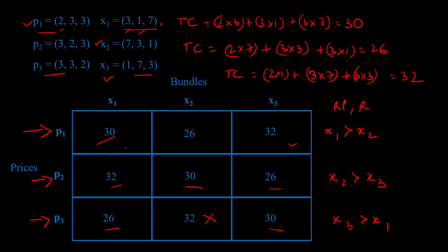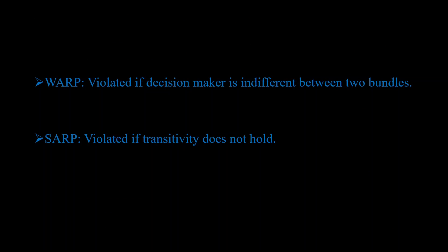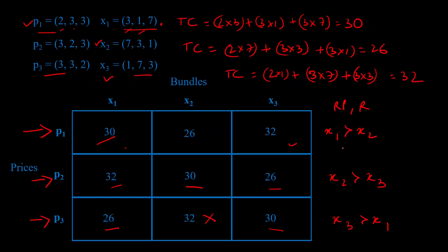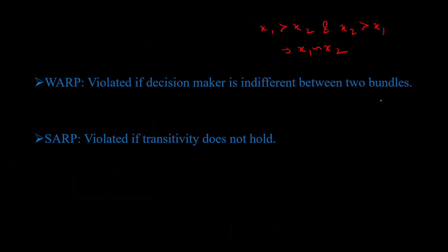Now all we have to do is check for WARP and SARP. For WARP to hold, the decision maker must not be indifferent between any bundles — meaning if X1 is preferred to X2, we should not also find X2 preferred to X1. Checking our table: X1 is preferred to X2 but not vice versa; X2 is preferred to X3 but not vice versa; X3 is preferred to X1 but not vice versa. So WARP is not being violated — our data set satisfies WARP.